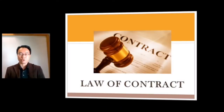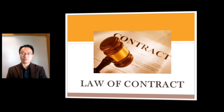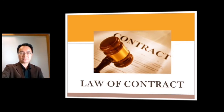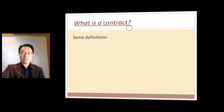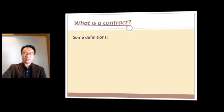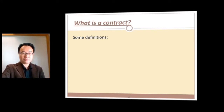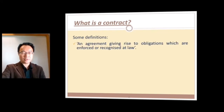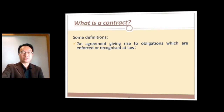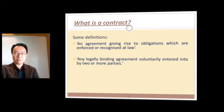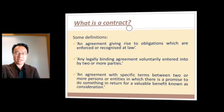Hi, this is the e-learning for Law of Contract, which is part of your business environment lessons. Let's look at what a contract is. We're going to start out with some definitions. It's an agreement giving rise to obligations. It's a legally binding agreement, and it's an agreement with specific terms between two persons.